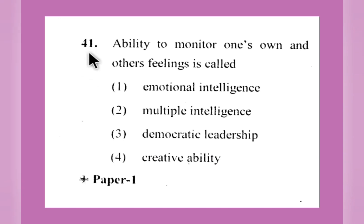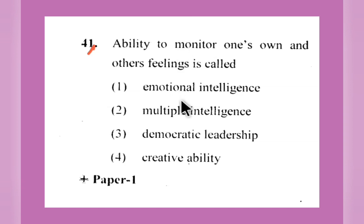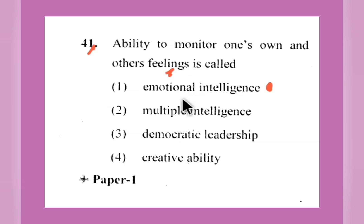Question number 41: Ability to monitor one's own and other's feelings is called — emotional intelligence, multiple intelligence, democratic leadership, or creativity? Monitoring one's own and others' feelings is about emotions. Multiple intelligence covers things other than just feelings. Democratic leadership means controlling others. Creative ability is not related. Emotional intelligence — option number 1 — is the right answer.